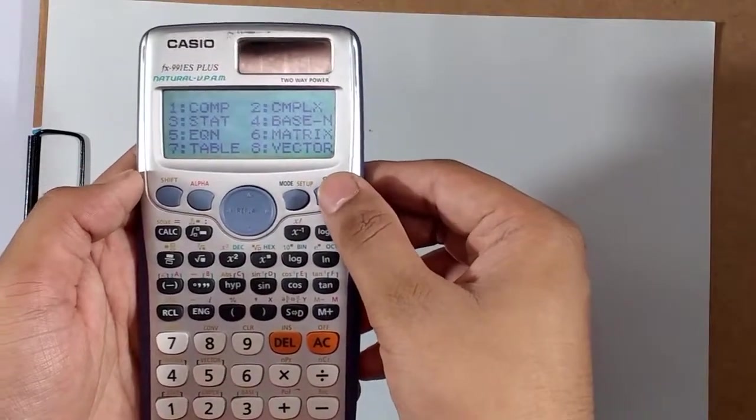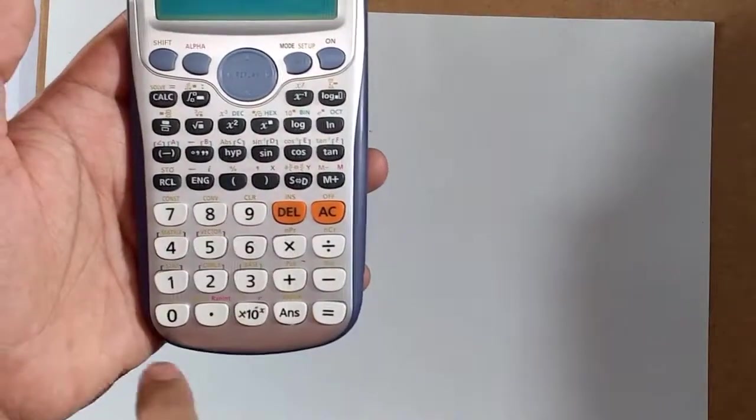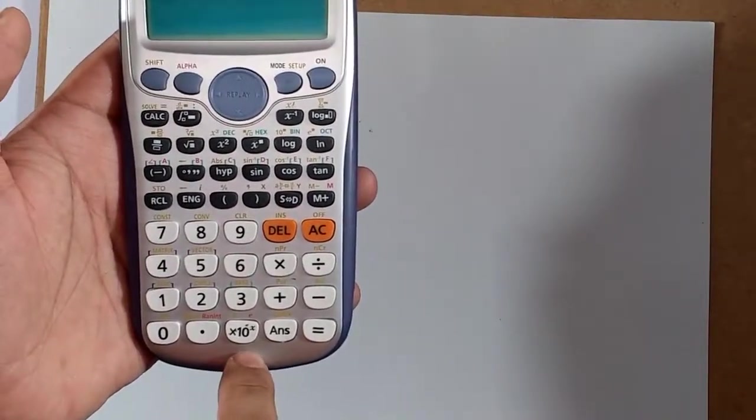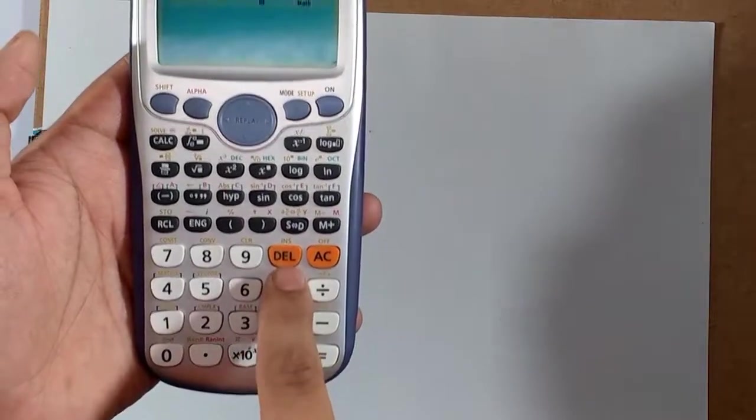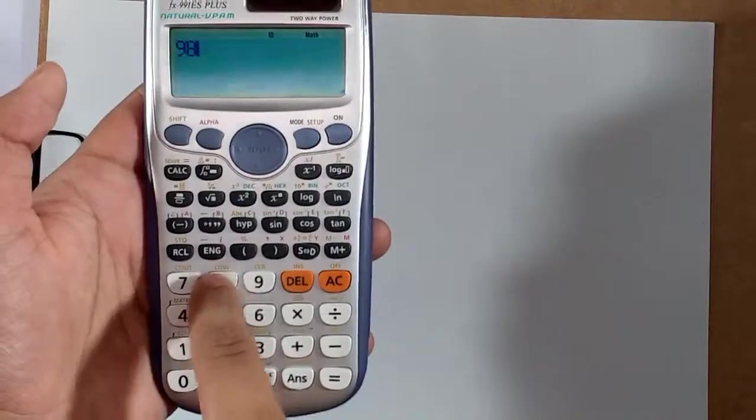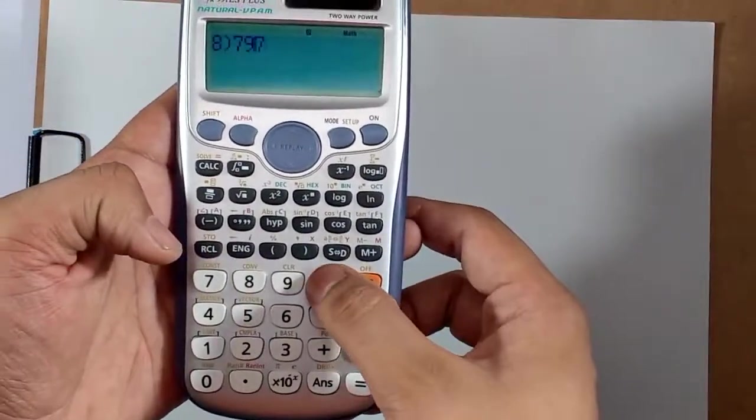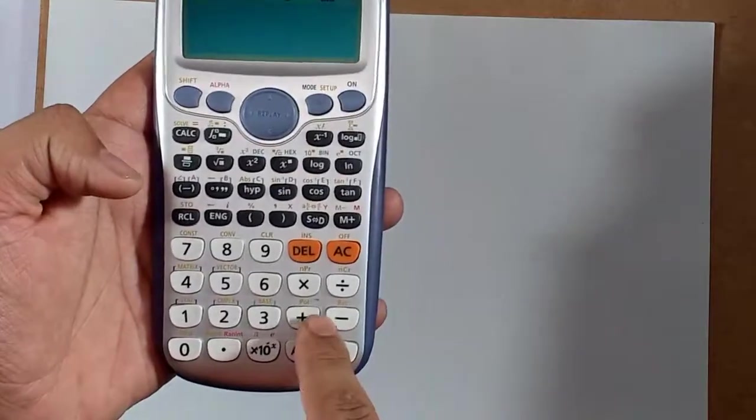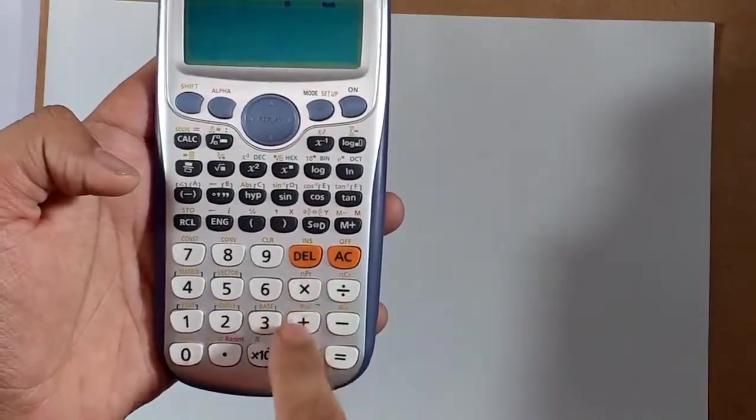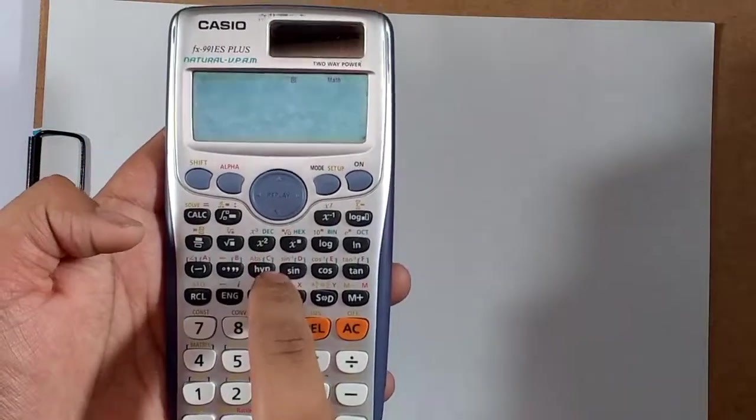This is the numpad, the decimal point, 0 to 9. This is the delete and this is the AC button which deletes all the things written, and delete is like the backspace. These are the functions: multiplication, division, addition, subtraction, equal to, and answer which is stored in this calculator itself.